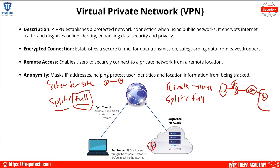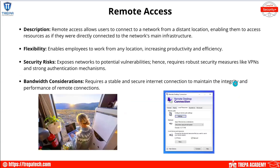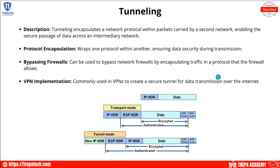Remote access is where an employee can be roaming — as long as they have internet capability, they can access our network. Tunneling encapsulates a network protocol within packets carried by a second network.